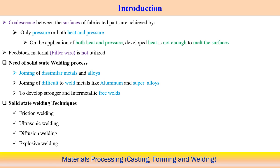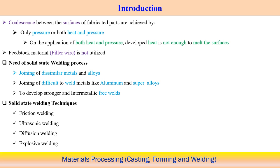Another reason for solid state welding is joining difficult-to-weld materials. For example, aluminium has high affinity for oxide formation, and super alloys tend to develop cracks during fusion welding. In solid state welding of aluminium, the chances of oxide formation are considerably reduced. Additionally, solid state processes can produce stronger, inter-metallic-free or low inter-metallic welds. These are the main driving forces for using solid state deformation processes.